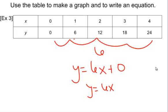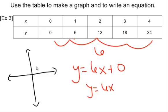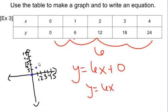Now let's graph those points. My x's I'll go up by 1s, and my y's I'm going to have them go up by maybe 5s. When x is 0, y is 0. When x is 1, y is 6. When x is 2, y is 12. When x is 3, y is 18. When x is 4, y is 24. So we have our graph and our equation.